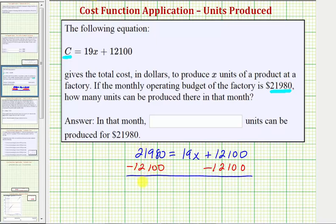On the left side, this difference is 9,880 equals, on the right side, this would be zero, so we just have 19x.